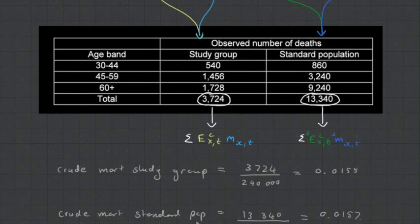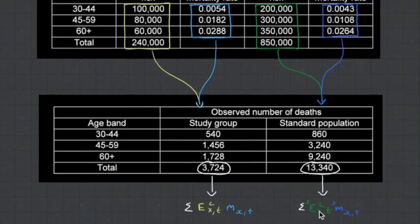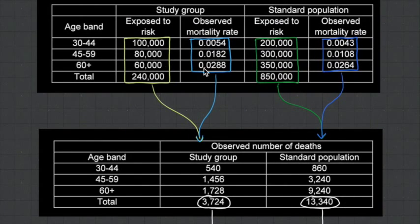We would expect the crude mortality rate of the study group to be heavier than that of the standard population. However, when we do our calculation, we see that the opposite happens. The study group has got a lighter crude mortality rate than the standard population. Look over here. We've got the biggest number for the standard population with the old 60-year-olds who have a heavier mortality. Whereas our study group, the biggest number is between the 30- and 44-year-olds, who have the lightest mortality.